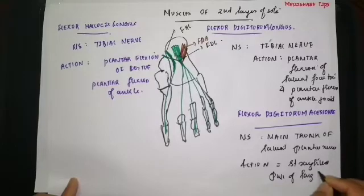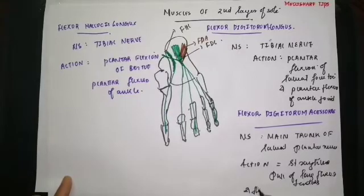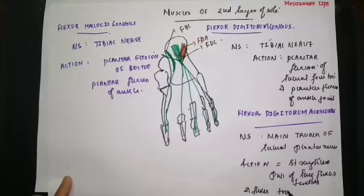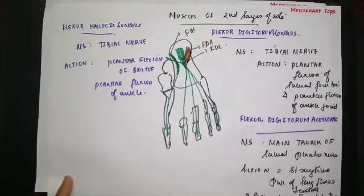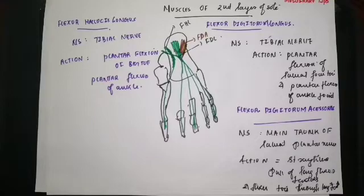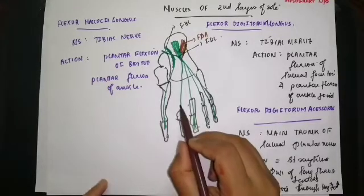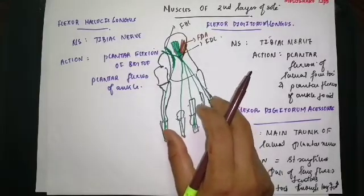The action of the flexor digitorum accessorius is that it straightens the pull of the long flexor tendons and flexes the toes in line with the long tendons. The other muscles originating from the tendon of the flexor digitorum longus — like in the upper limb — are the lumbricals. Since there are four tendons of the flexor digitorum longus, we have four lumbricals in total.